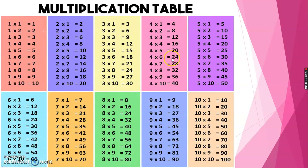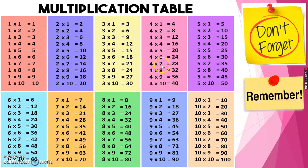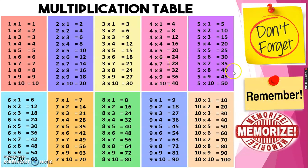This is what you call the multiplication table. We have 1, 2, 3, 4, 5, 6, 7, 8, 9, 10. Kids, don't forget — remember and memorize.